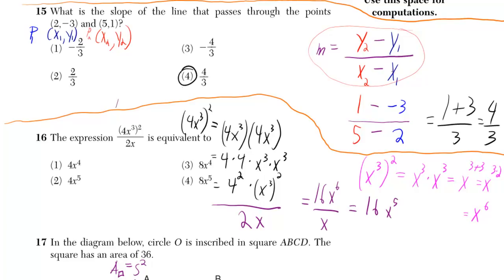And we just got to plug in. So y-coordinate number 2 was 1, so we just put 1 there. Y-coordinate number 1 was negative 3, so we put negative 3 there. X-coordinate number 2 was 5, x-coordinate number 1 was 2.